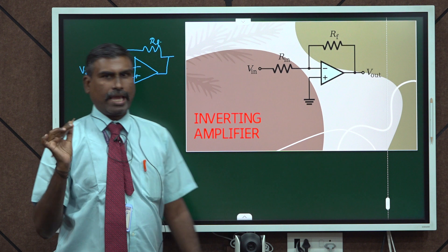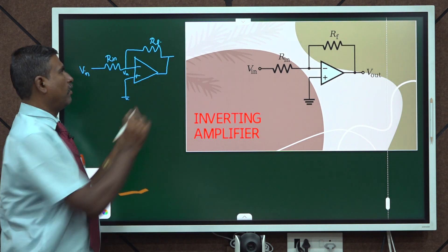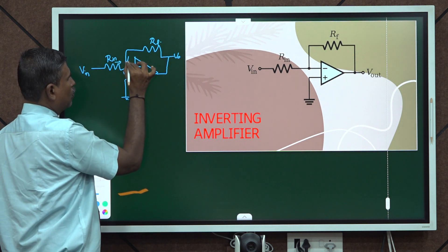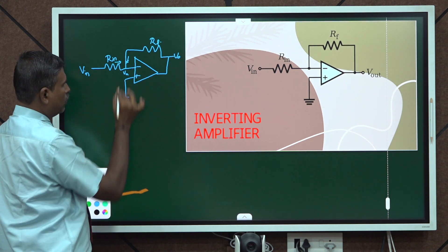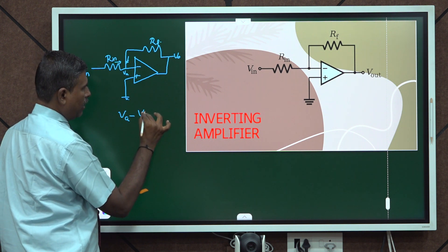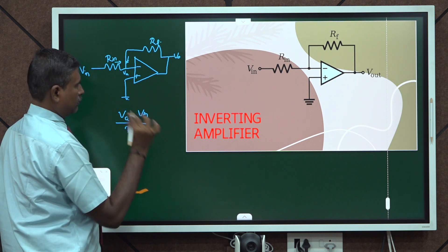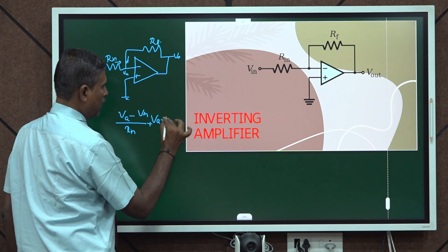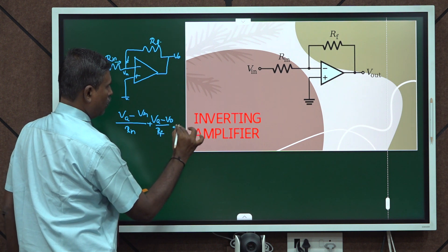Let us call this node as VA. By applying nodal voltage analysis at this point, we get the derivations. Considering the currents entering this node, we write the nodal equation. For this node we have: (VA minus V_in) divided by R_IN, and (VA minus V_0) divided by R_F, equal to 0.